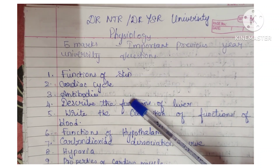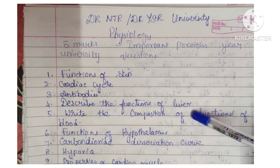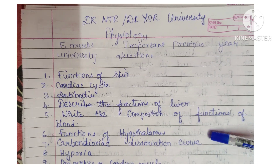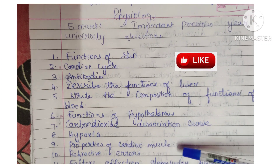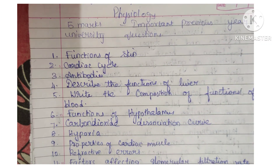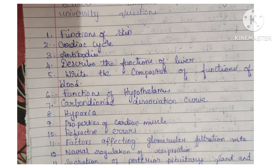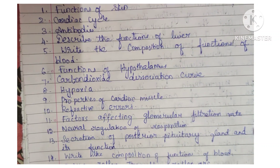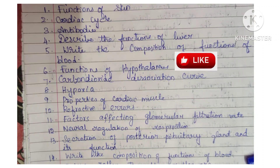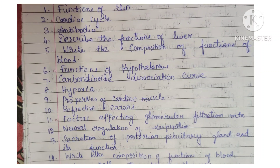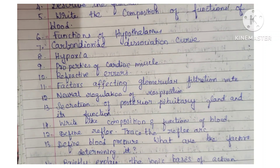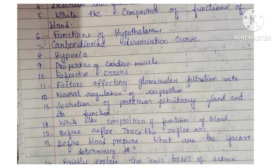Physiology topics include: functions of skin, cardiac cycle, antibodies, functions of liver, composition and functions of blood, functions of hypothalamus, carbon dioxide dissociation curve, hypoxia, properties of cardiac muscle, refractive errors, factors affecting glomerular filtration rate, neural regulation of respiration, secretion of posterior pituitary gland and its functions, composition and functions of blood, define reflex, trace the reflex arc, define blood pressure, and what are all the factors determining it.